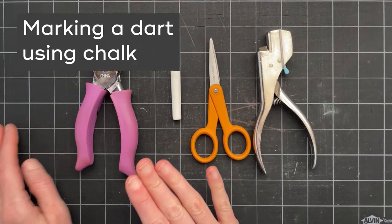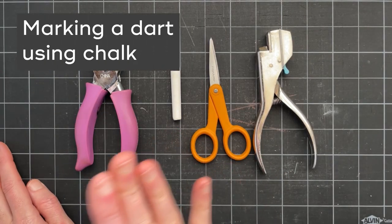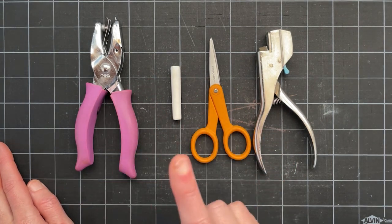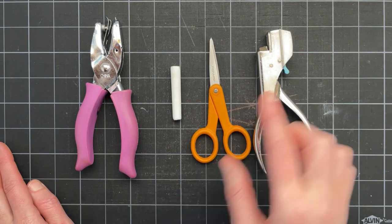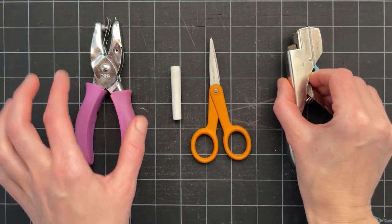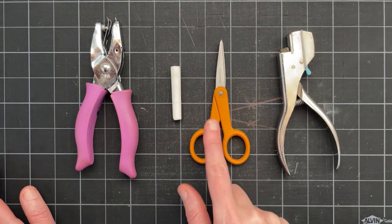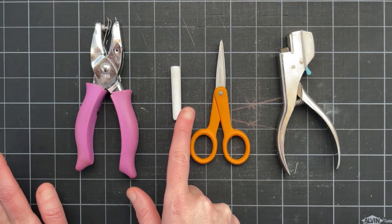I used to use my tracing wheels to mark my darts but lately, probably the last 10 years, I use these tools instead and I'm going to show you how I use them. I have a pattern notcher, a small hole punch, my thread snips that will also clip the fabric, and just a regular piece of chalk.